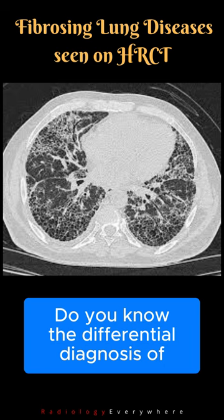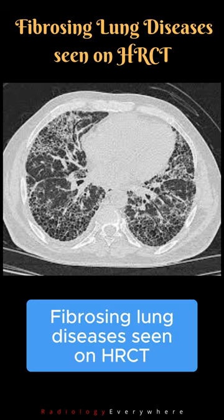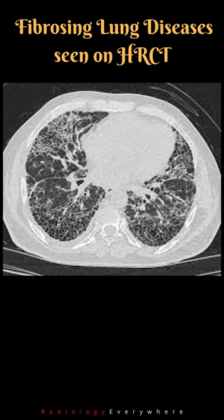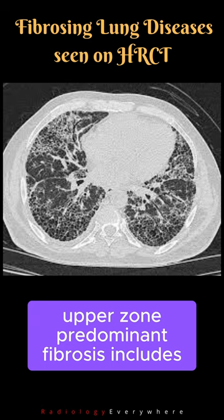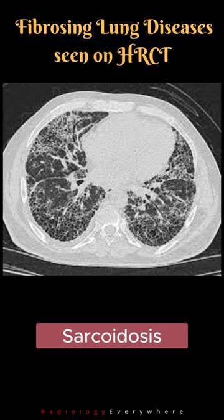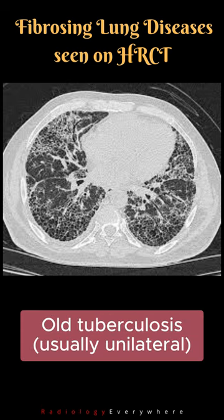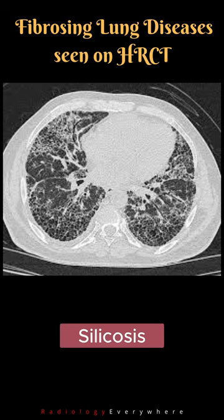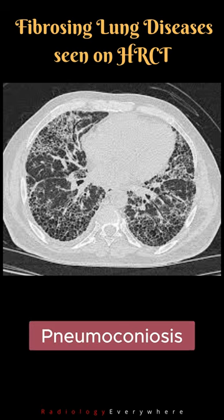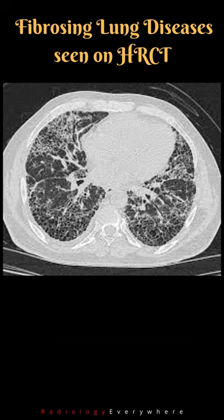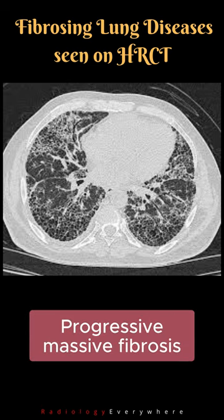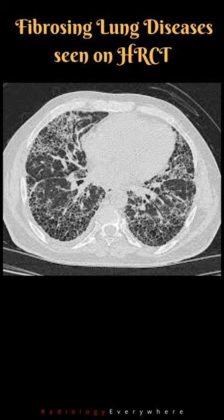Do you know the differential diagnosis of fibrosing lung diseases seen on HRCT upper zone? Predominant fibrosis includes sarcoidosis, old tuberculosis (usually unilateral), silicosis, pneumoconiosis, and progressive massive fibrosis.